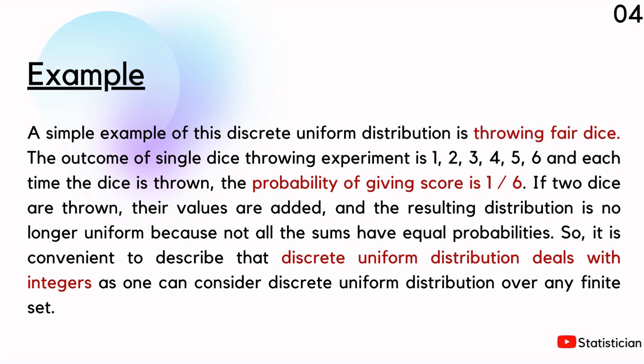If two dice are thrown and their values are added, the resulting distribution will not be uniform because not all sums have equal probabilities.